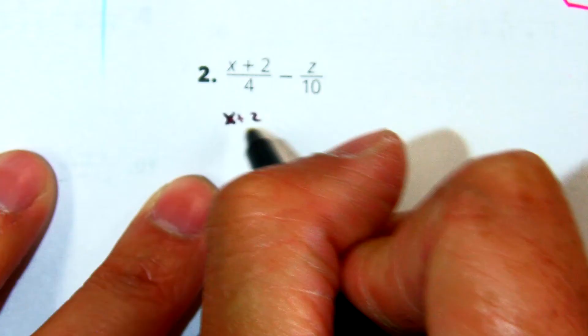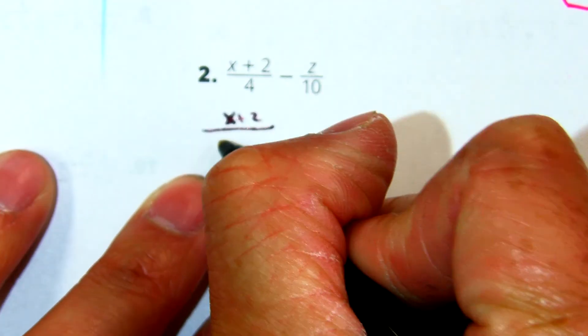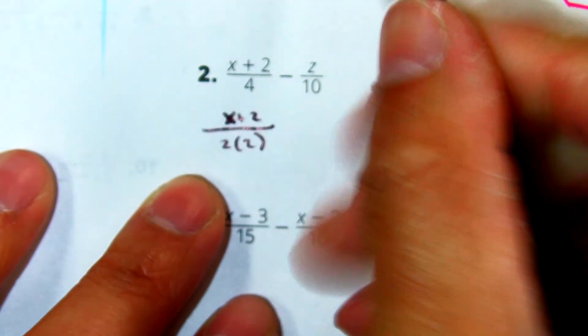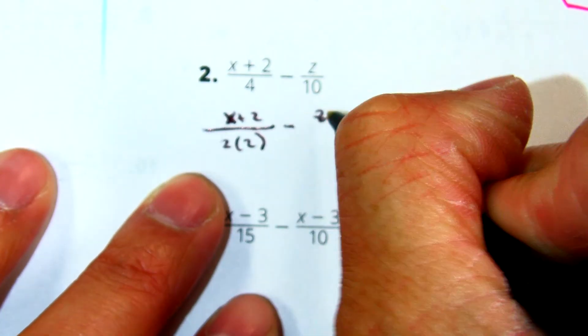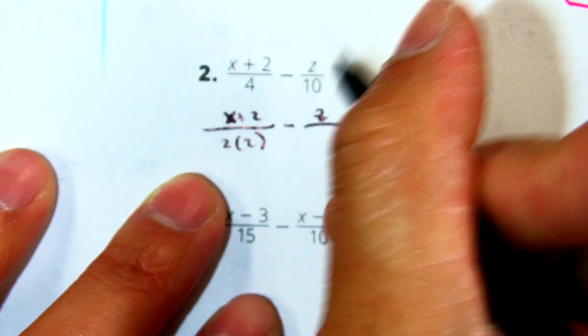X plus 2. Class, what are the numbers that I multiply to be 4? 2 and 2 and 4 and 1, right? And what are the factors of 10? 5 and 2.